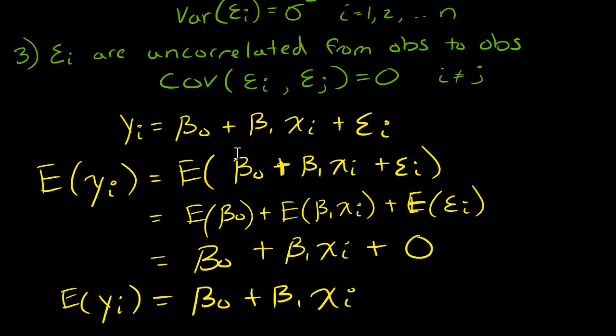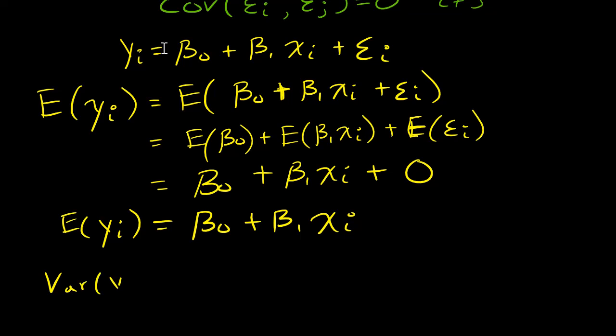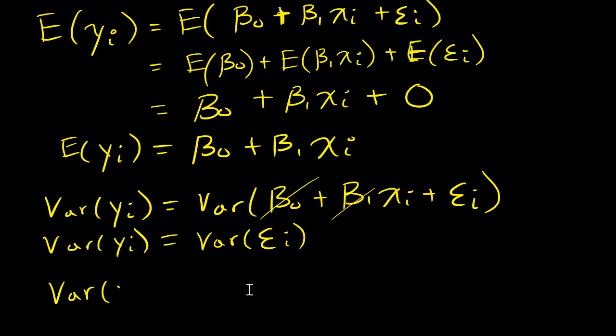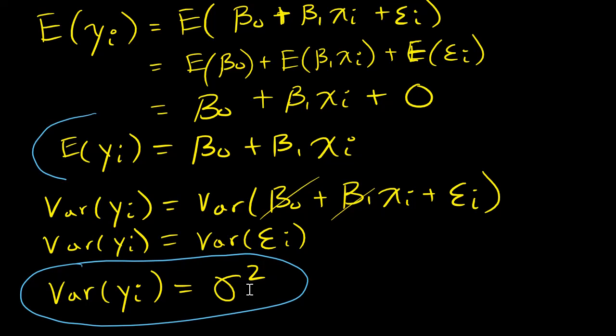Now what about the variance of yi? It equals the variance of beta naught plus beta one xi plus epsilon i. And the variance of constants is just zero. So when I distribute this variance in, this basically goes away. It's zero, this is zero, and I'm left with the variance of epsilon sub i. So the variance of y sub i - the variance of epsilon sub i is sigma squared. So the variance of yi is sigma squared, and the expected value of y sub i is beta naught plus beta one times x sub i.